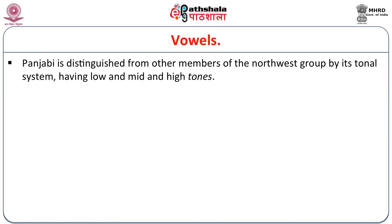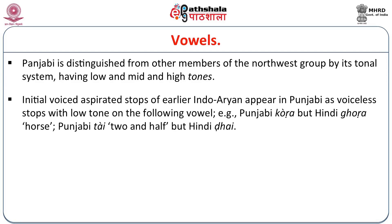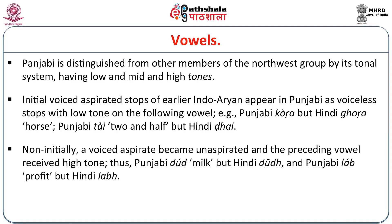Punjabi is distinguished from other members of the Northwest group by its tonal system, having low, mid, and high tones. Initial voiced aspirated stops of earlier Indo-Aryan appear in Punjabi as voiceless stops with low tone on the following vowel: Punjabi — khoḍa, Hindi — ghoḍa. Non-initially, a voiced aspirate became unaspirated and the preceding vowel received high tone: thus Punjabi — doodh but Hindi — doodh, and Punjabi — labh but Hindi — labh.